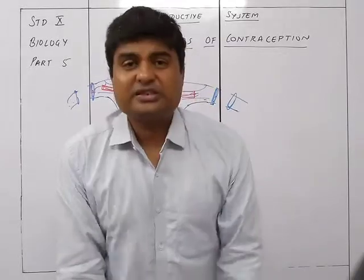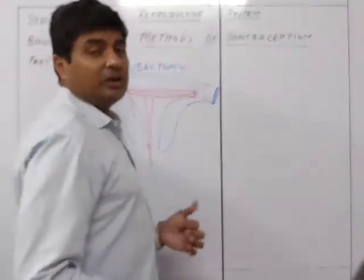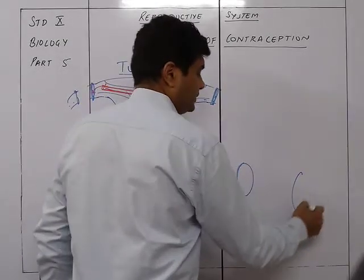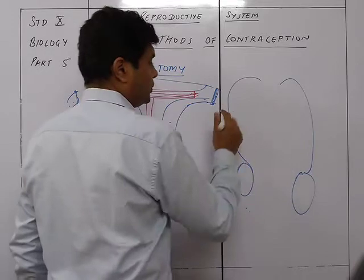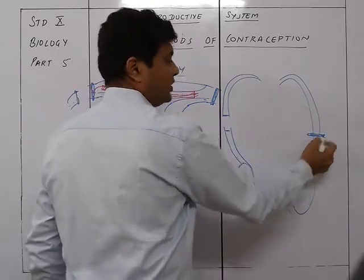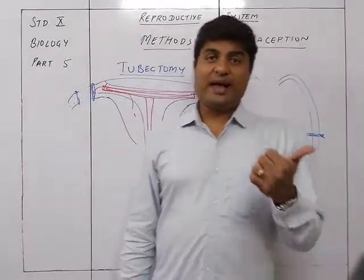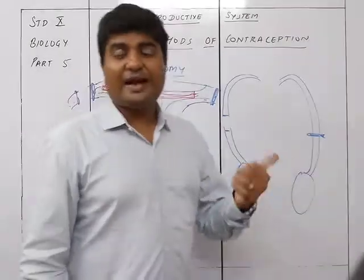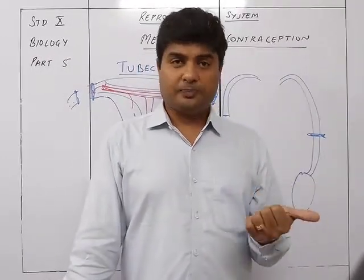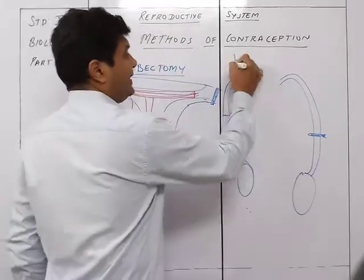This operation is called tubectomy. The same kind of operation can also take place in males. In males, sperm is transferred from the testes to the urethra by the sperm ducts. What is done is the sperm duct, or vas deferens, is ligated or cut — either cut or tied with a nylon thread — so sperm cannot reach the urethra. The semen will be produced as usual, erection will occur as usual, and testosterone production will continue, but the semen will lack sperm. This is called vasectomy.